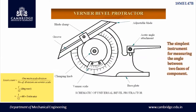This is the parts of the vernier bevel protractor, also called the universal bevel protractor. It is the simplest instrument for measuring the angle between the two faces of a component — acute angle, obtuse angle, and other types of angles can be measured. This bevel protractor has many components: this is the adjustable blade which can slide in the groove, this is the main scale, this is the vernier scale, and this is the clamping knob to tighten and lock at one position when measuring between the fixed and the moving plate.